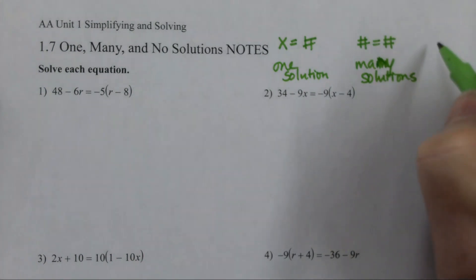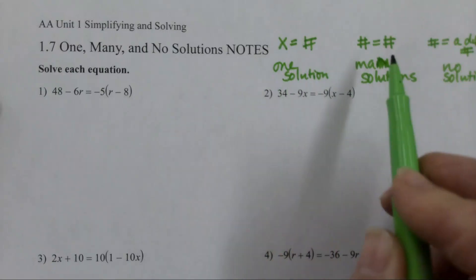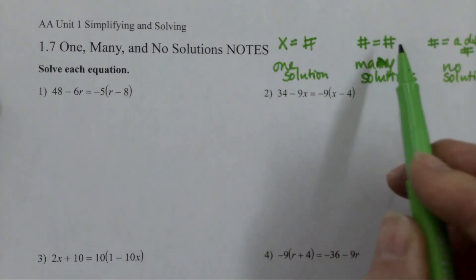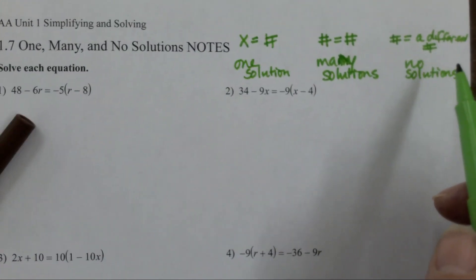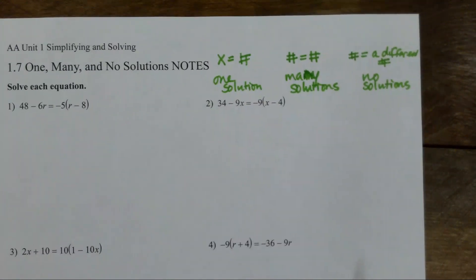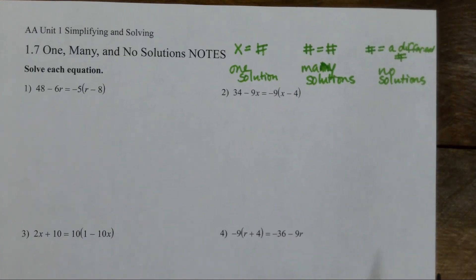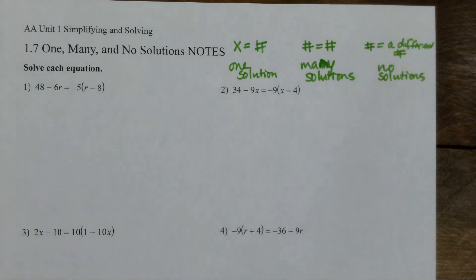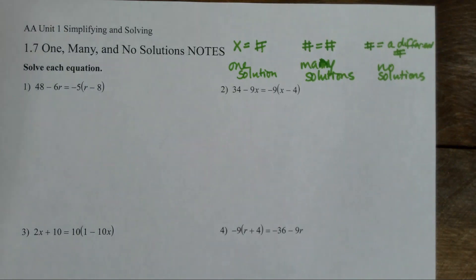But if I get a number equals a different number, that is no solutions. So we get a number equals itself or a number equals a different number, then we have no solution. Let's get to solving and see what these look like. Remember, what's the first thing that you have to do? Distribute. Yep.